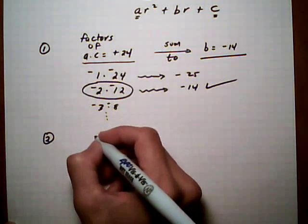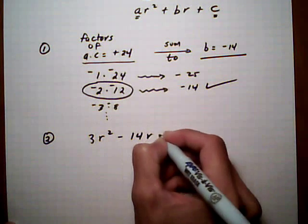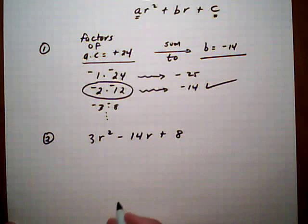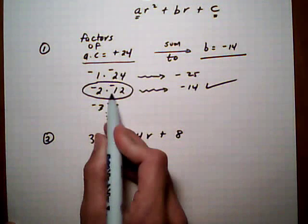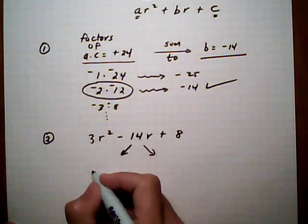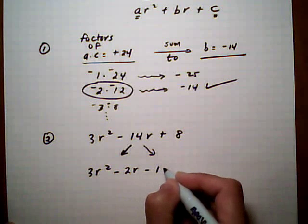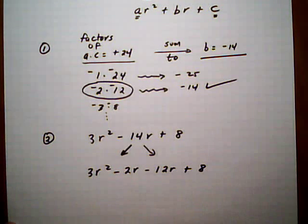We're going to rewrite the trinomial by splitting the middle term. The middle term is going to split into the two pieces that we just found here. Minus 2 minus 12 gives us minus 14. So it's 3r squared minus 2r minus 12r plus 8.